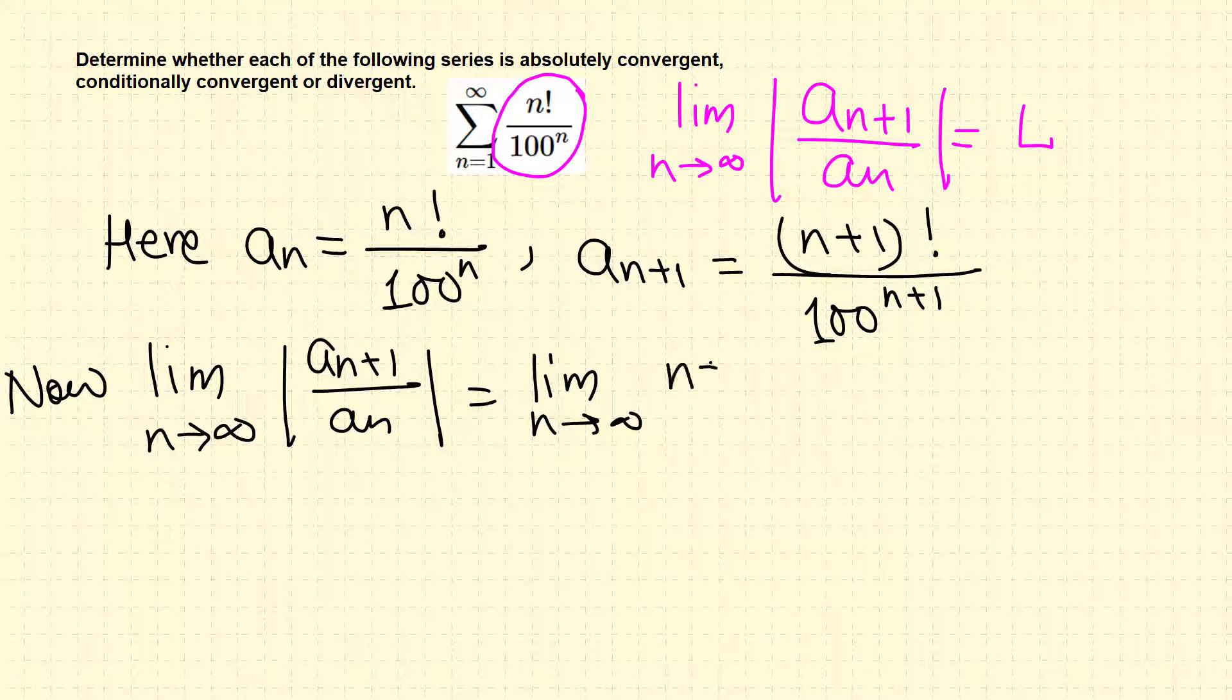So a_{n+1} is (n+1) factorial over 100 raised to n+1, divided by a_n, which is n factorial over 100 raised to n.